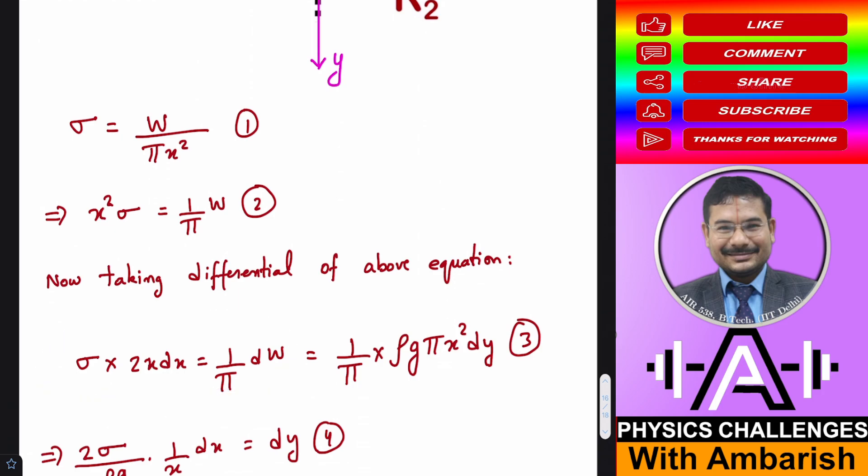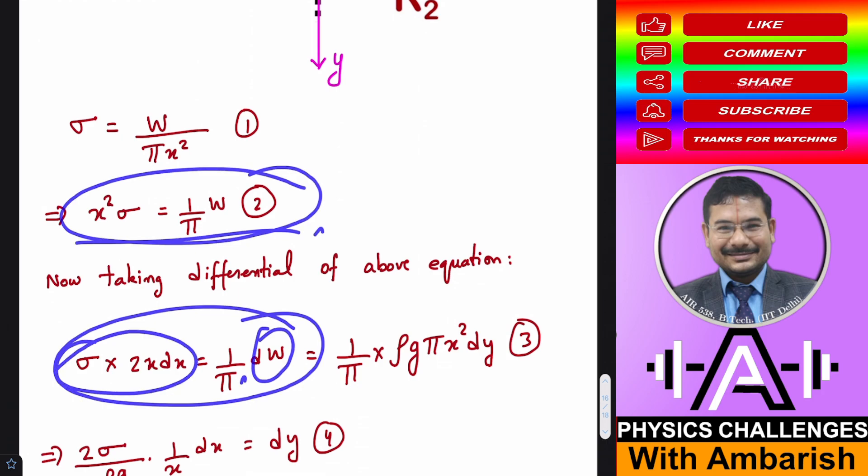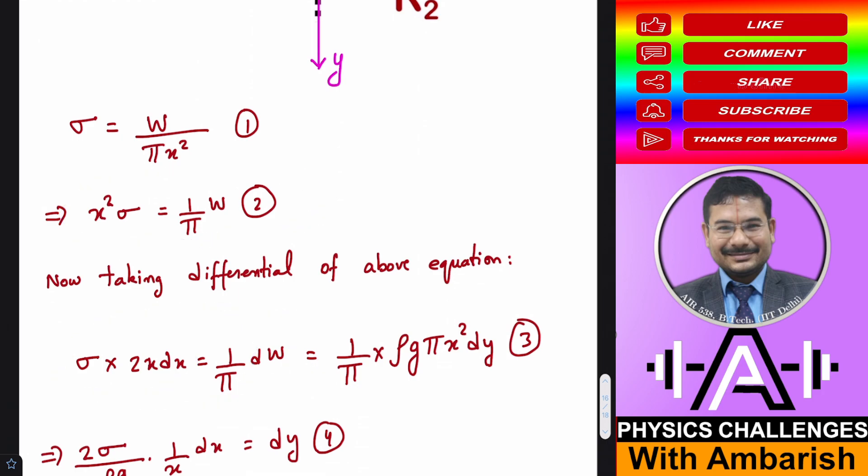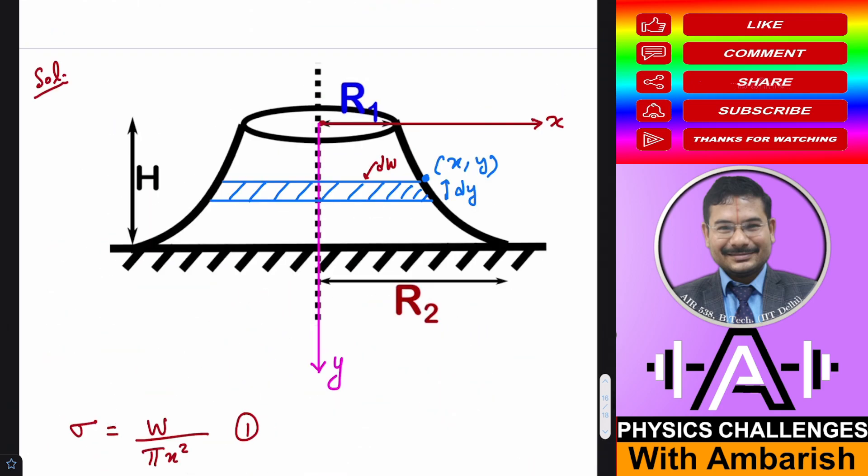So if you don't want to just think in terms of mathematics taking the differential, you could as well write dw is equal to σ into 2π x dx. That is, additional weight is σ times additional area, that's the rationale of this equation.